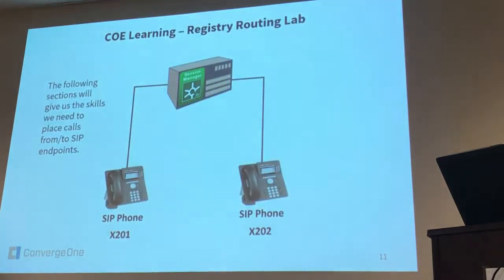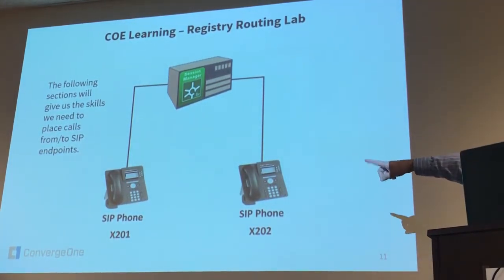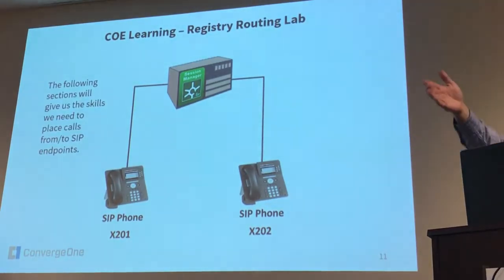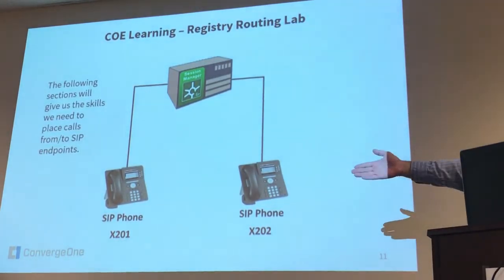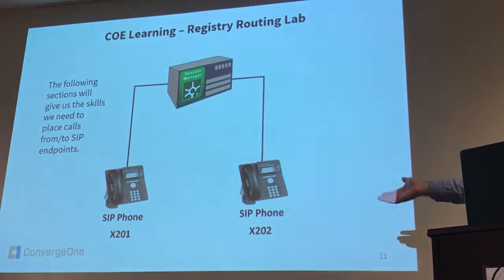For the lab, you want to configure two SIP phones with extensions based on your lab number — it's just one digit. So if you're in lab one, it's one; lab two is two. For example, lab three would have extensions 3201 and 3202, and lab four would have 4201 and 4202.